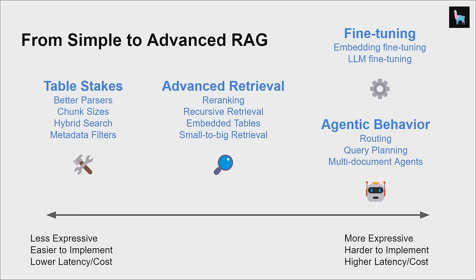If you're running into performance issues with RAG, I'd probably start with the basics — I call them table-stakes RAG techniques. Better parsing so that you don't just split by even chunks, adjusting your chunk sizes, trying out stuff that's already integrated with a vector database like hybrid search, as well as metadata filters.